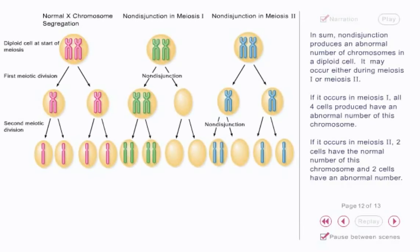In sum, non-disjunction produces an abnormal number of chromosomes in a diploid cell. It may occur either during meiosis I or meiosis II. If it occurs in meiosis I, all four cells produced have an abnormal number of this chromosome. If it occurs in meiosis II, two cells have the normal number and two cells have an abnormal number.